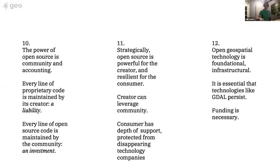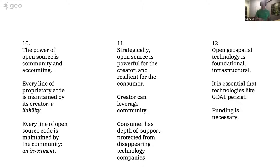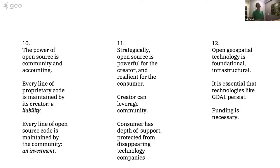The power of open source is community and accounting — and by accounting I don't necessarily mean money. Every time you write a line of proprietary code, you write a liability for your organization. But every time you write a line of open source code, you write an investment for your organization or your community. That's an important differentiator. It also applies to open data products like OpenStreetMap. If you create a feature, it can be managed by the community. If you create a feature and you own the map, you just created another liability that you have to maintain over time. That is a deep differentiator in the philosophy that other people might not necessarily be thinking deeply about, but is very important.